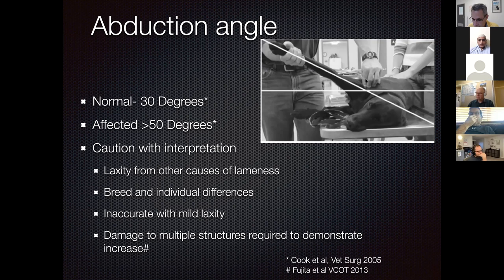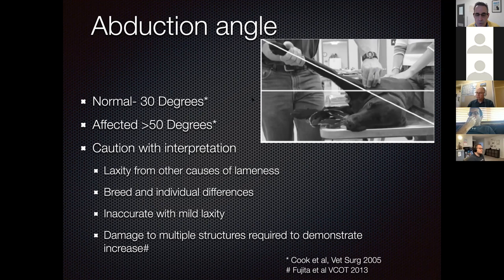In one case during palpation for abduction angle, the reading was about 30 degrees, then suddenly there was a pop and the angle jumped to about 70 degrees—a dramatic diagnostic finding confirming ligament damage. A normal ligament would not pop like that; this dog was probably only a few strands away from complete rupture.